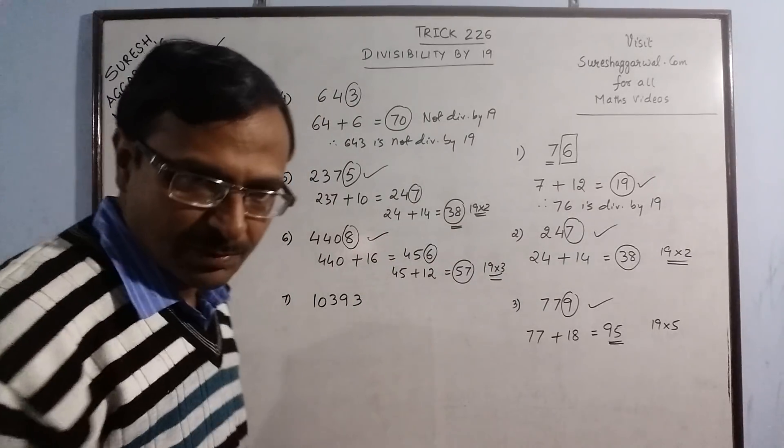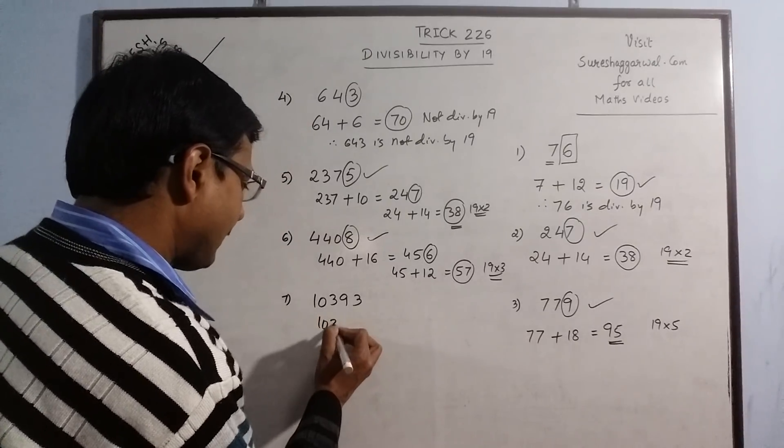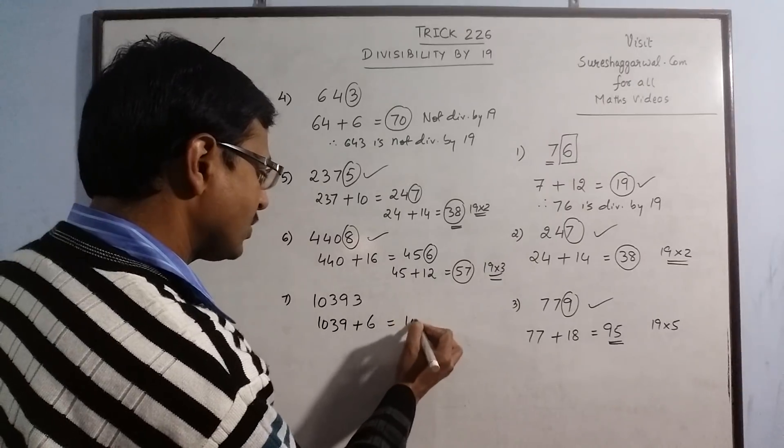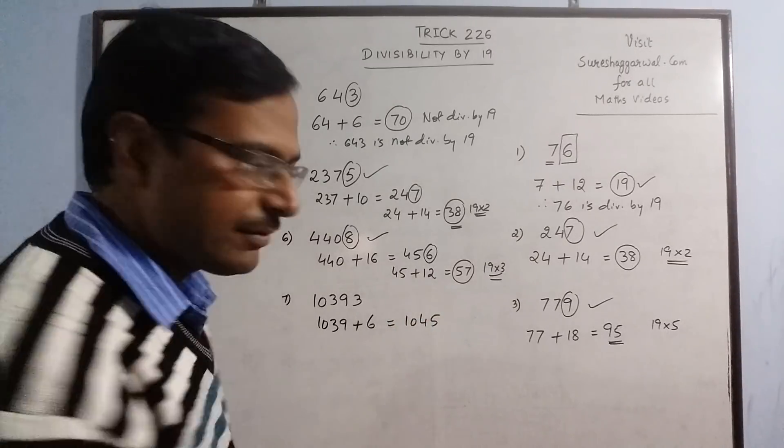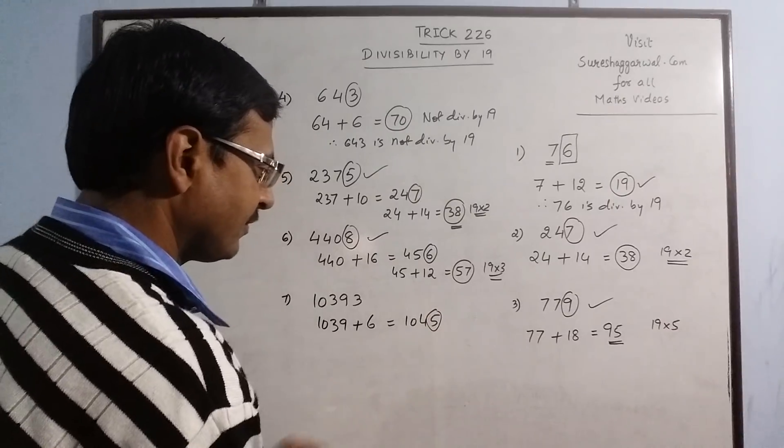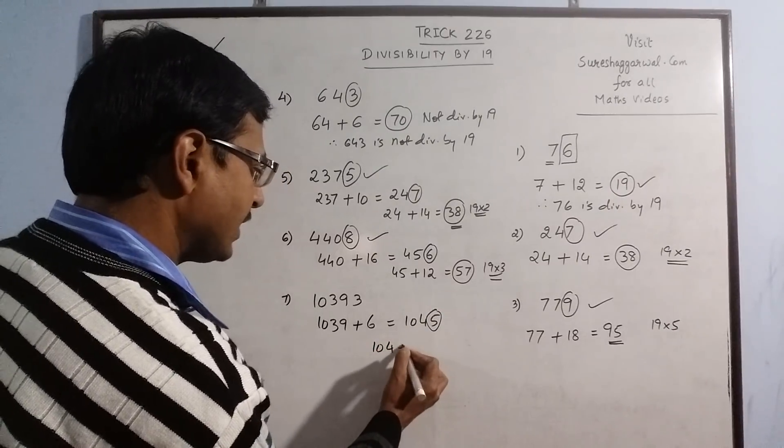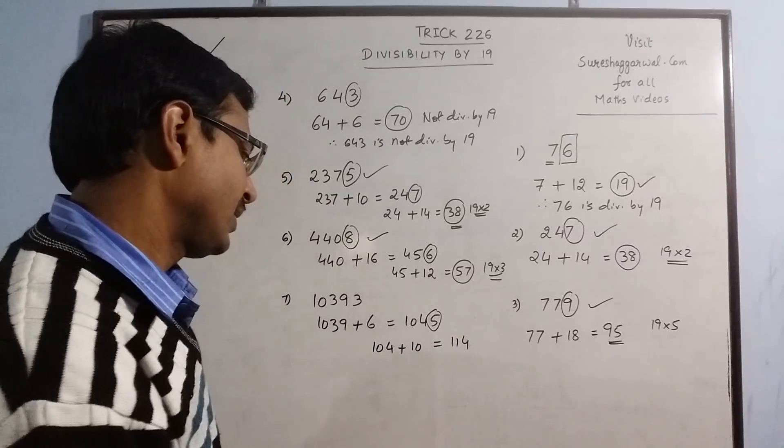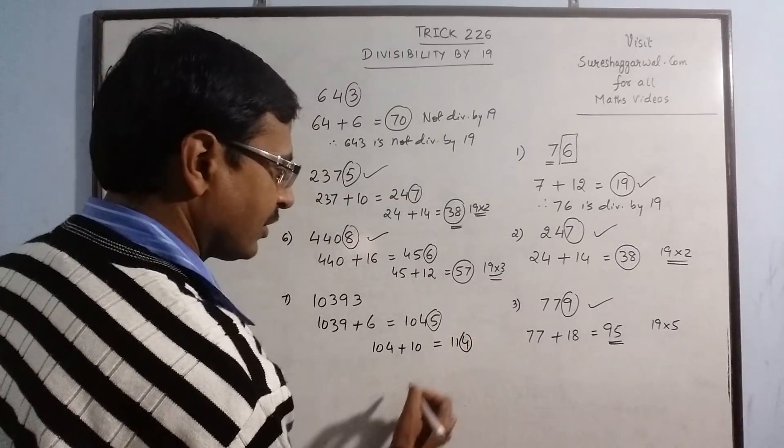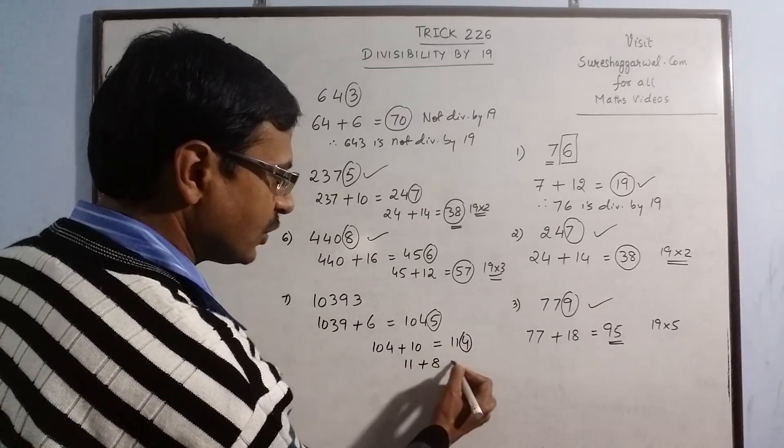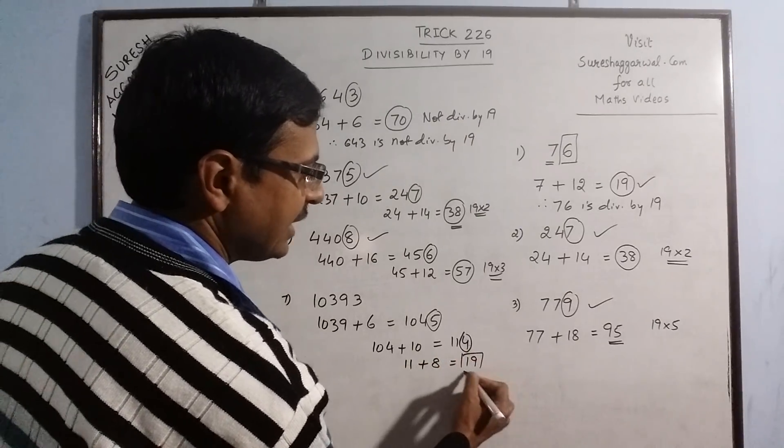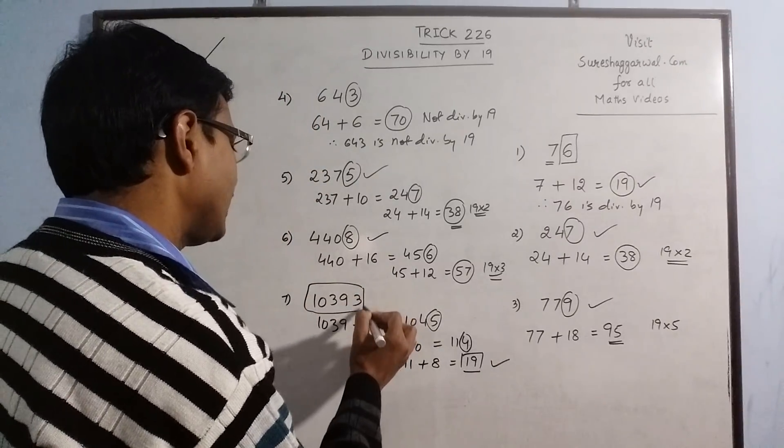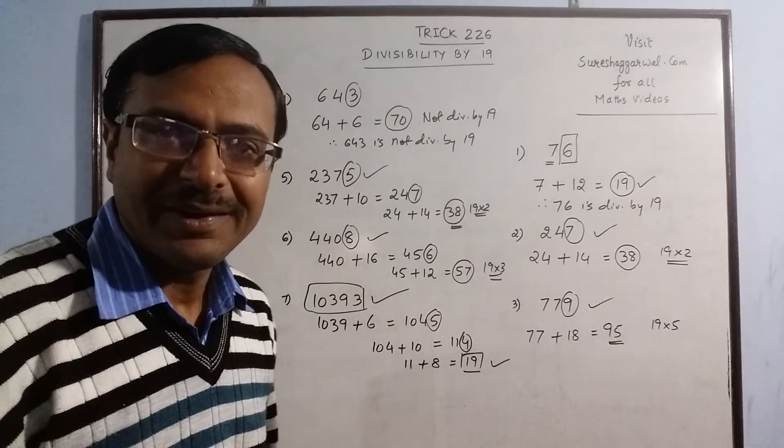Now see, 5 digit number. 1039 plus double of 3 is 6, so you get 1045. 1045, unit digit is 5. 104 plus double of 5 is 10, which is 114. 4, so 11 plus double of 4 is 8, so you get 19. And 19 is obviously divisible by 19. So the entire number 10393 is divisible by 19.